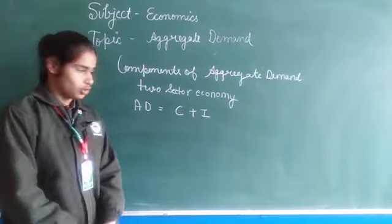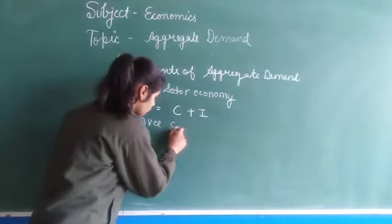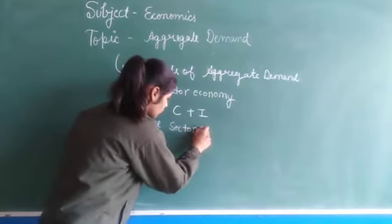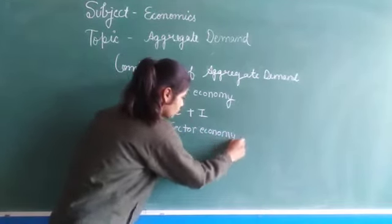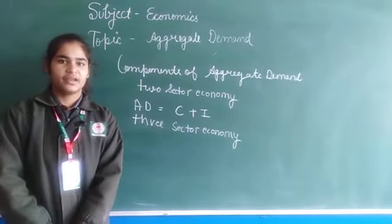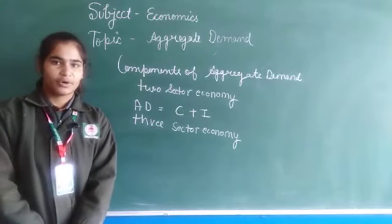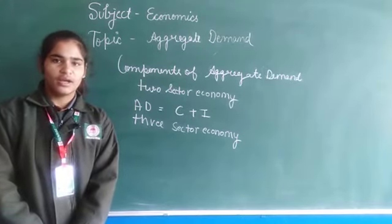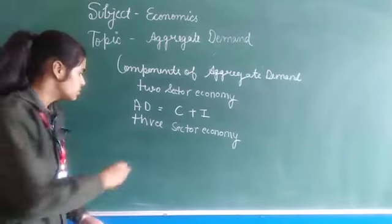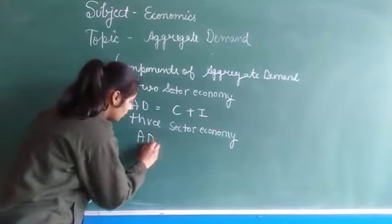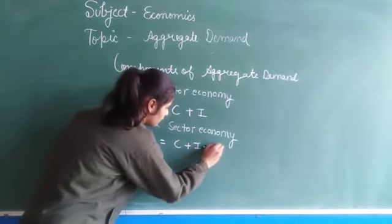In three-sector economy, government plays a mean and significant role. Here, household sector, production sector, and also the government sector is included in the measurement of aggregate demand. So, aggregate demand is equal to C plus I plus G.